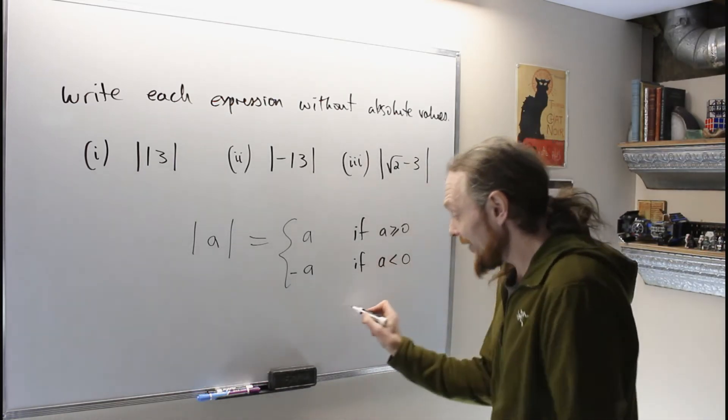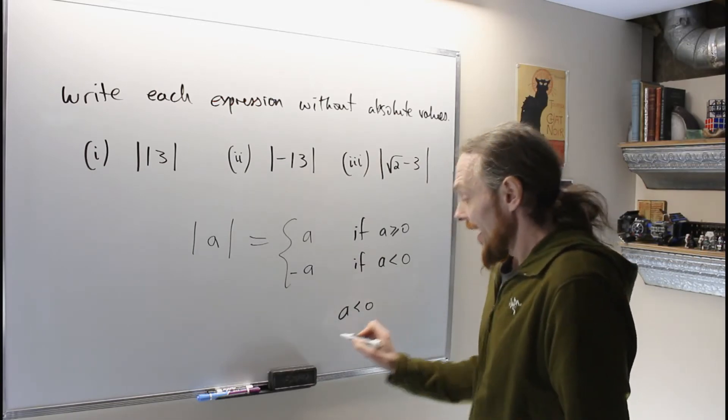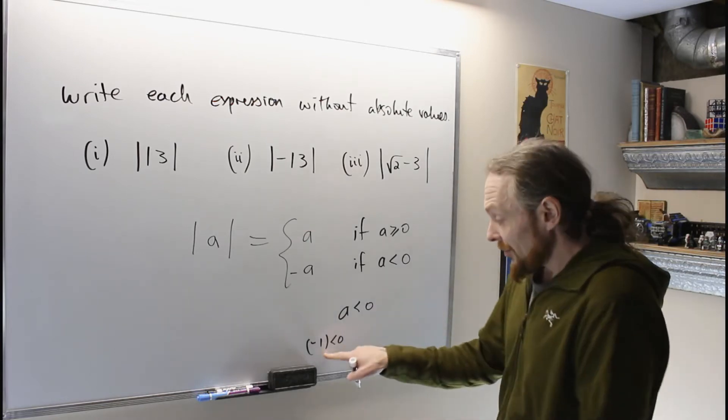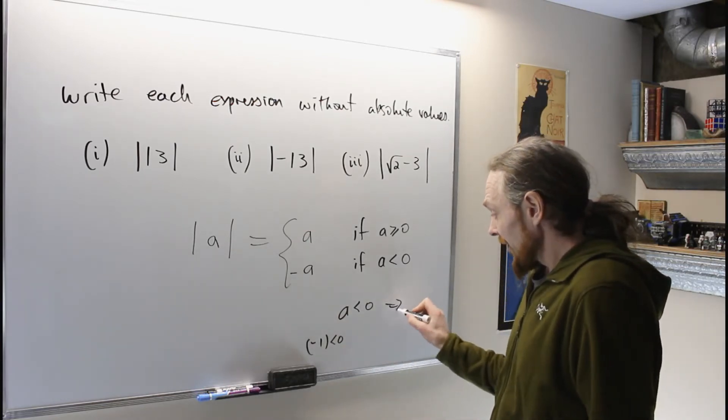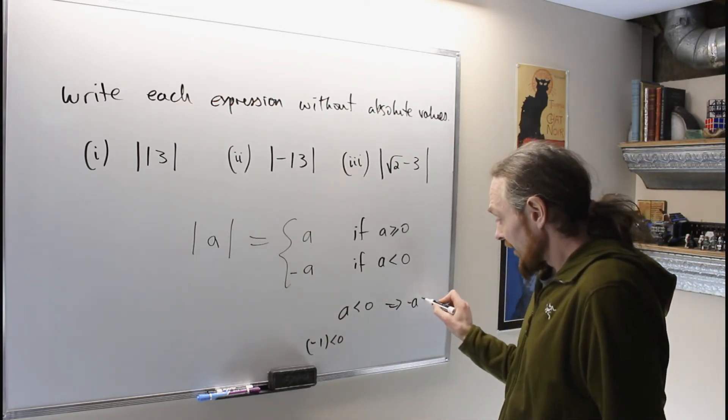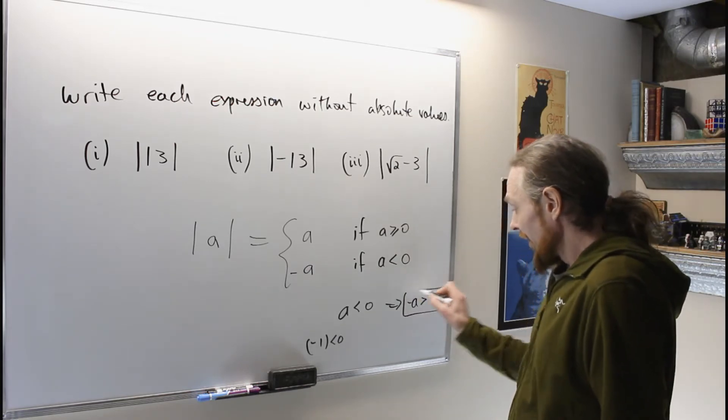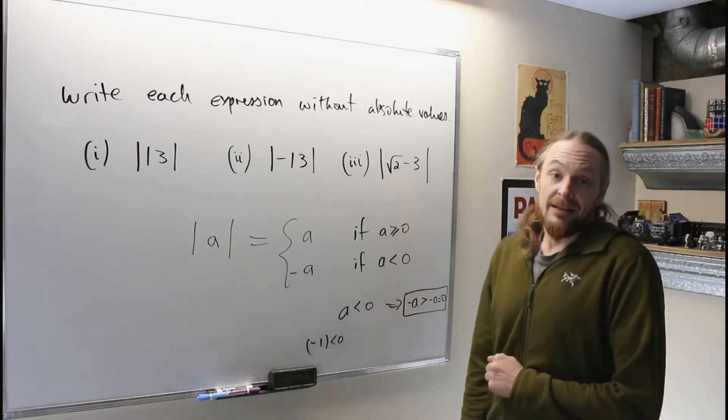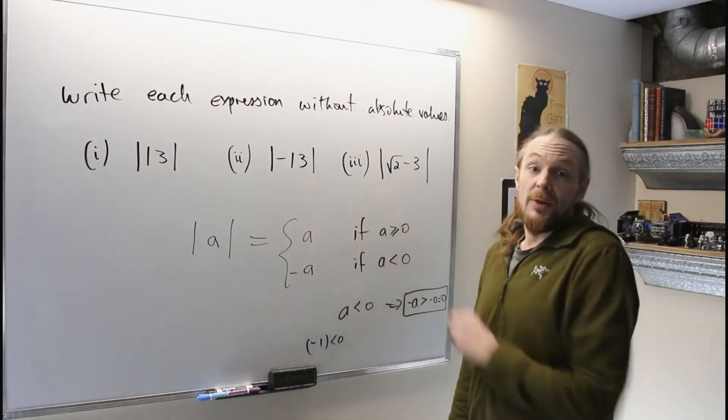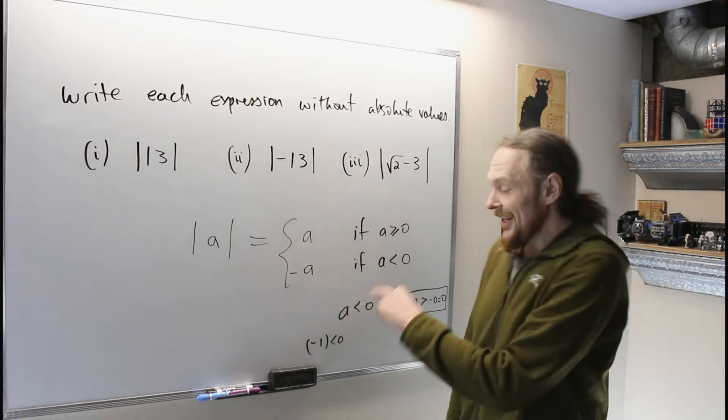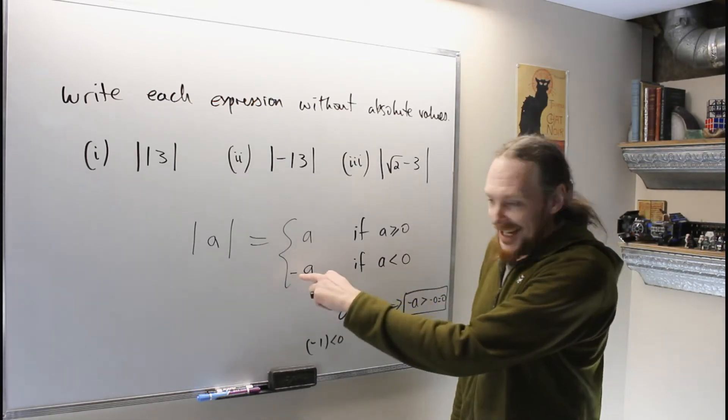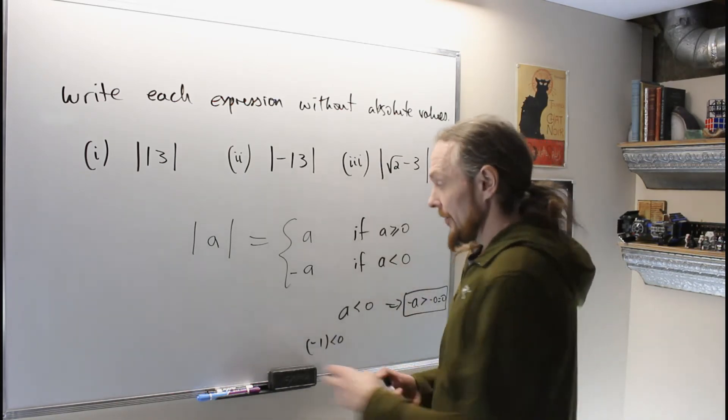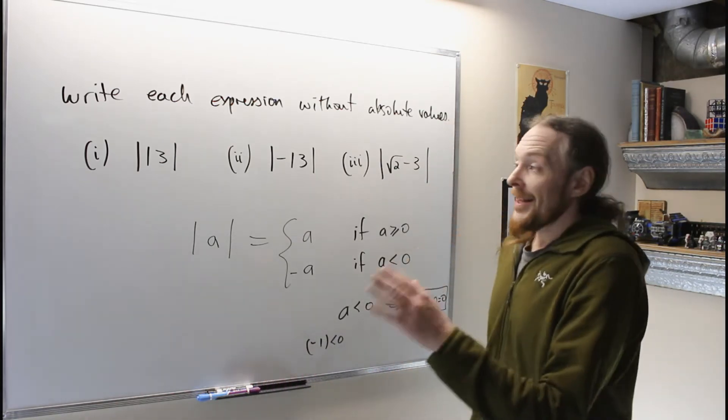If a is less than zero and I multiply by negative one, then multiplying both sides by this will give me negative a is greater than zero. So that negative a, even though negative is there, is a positive thing. So that's the first confusion with absolute value - you see a negative and you think he's negative, but he was already being negative, so this negative is making him positive.